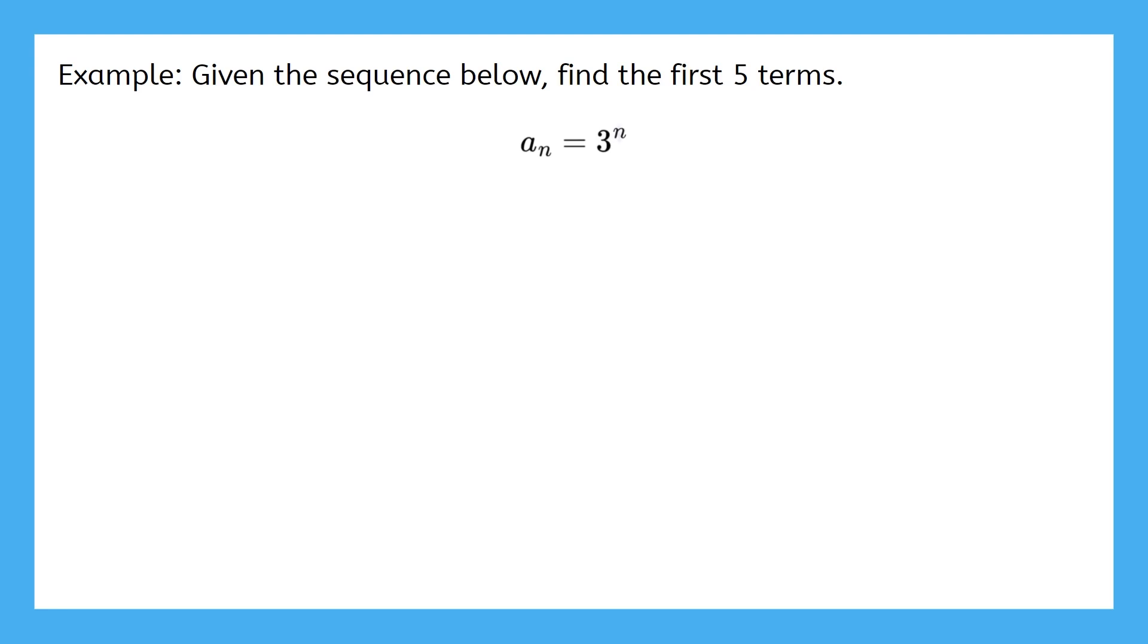If we substitute 1 for n, we get 3. If we substitute 2 for n, we get 9. For n equals 3, we get 27. For n equals 4, we get 81. And finally, for n equals 5, we get 243. These numbers are getting big fast.